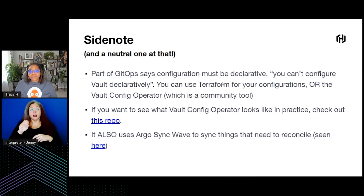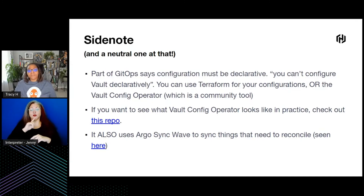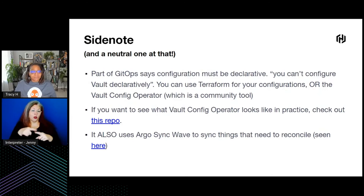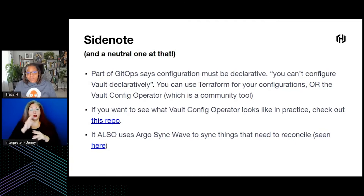Part of GitOps says configuration must be declarative. You can't configure Vault declaratively natively, but you can absolutely still use Terraform for your configurations, or the Vault config operator, which is actually a community tool. I've linked that repo in the slides. It also uses Argo sync wave to sync things that need to be reconciled.